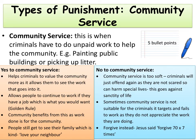The first type is community service — when criminals have to do unpaid work to help the community, for example painting public buildings or picking up litter. As we go through the ideas for and against community service, write down at least five bullet points with arguments for and against. First, community service is good because it helps criminals value the community more as it allows them to see the work that goes into it. It also allows people to continue to work if they have a job — we could use the golden rule to back this up. The community benefits from the work, and people still get to see their family. We could use love your neighbour to back up this idea.